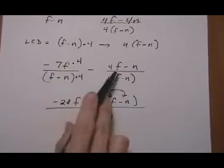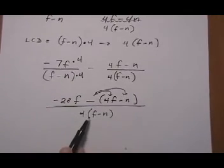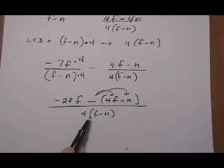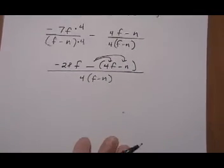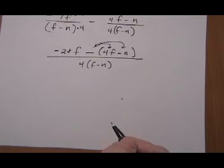Okay, so we subtracted the numerators, kept the denominator which was the LCD, and now we go ahead and simplify and reduce or cancel.